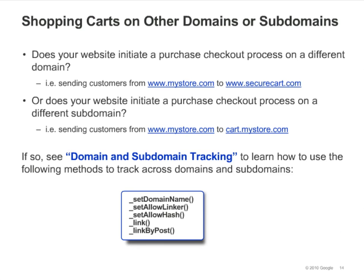For many eCommerce websites, the checkout process occurs on a separate domain or subdomain. For example, if you send customers from www.mystore.com to cart.mystore.com, you're sending them to a subdomain. If either of these scenarios applies to your site, you'll need to add some code to some of your pages so that you can track activity across domains and subdomains. The specific methods you'll use are listed on the slide, and you can learn how to use them in the module on tracking domains and subdomains.